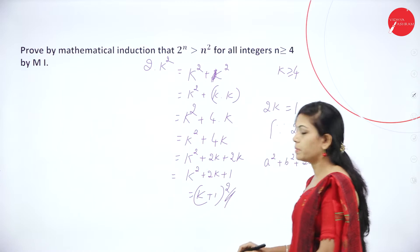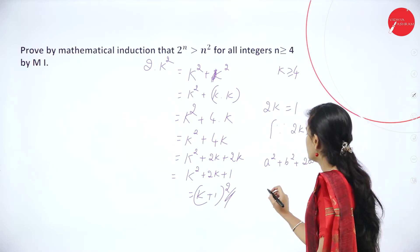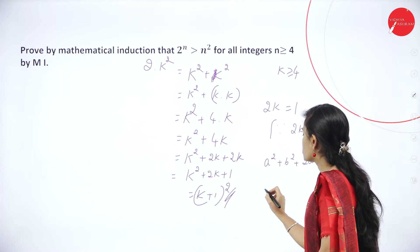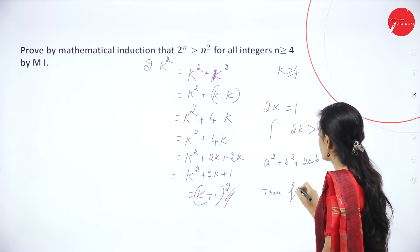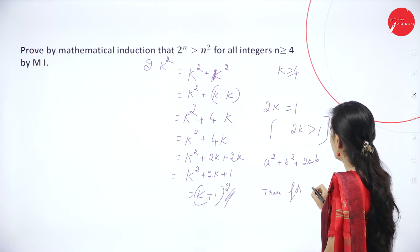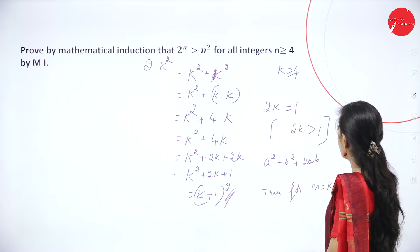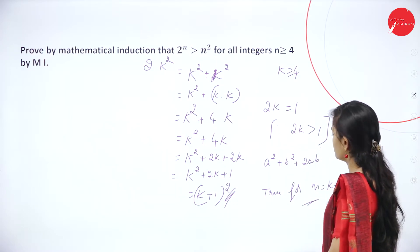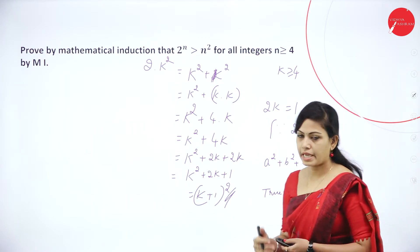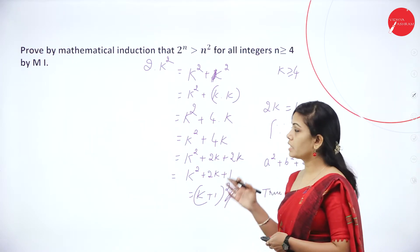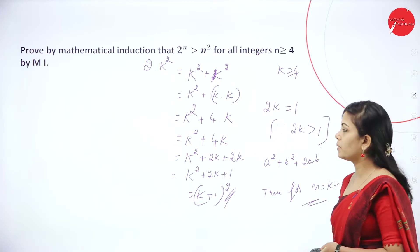So k plus 1 is true. The result is true for n equal to k plus 1. This is your solution — this type of question you can expect for 7 marks.